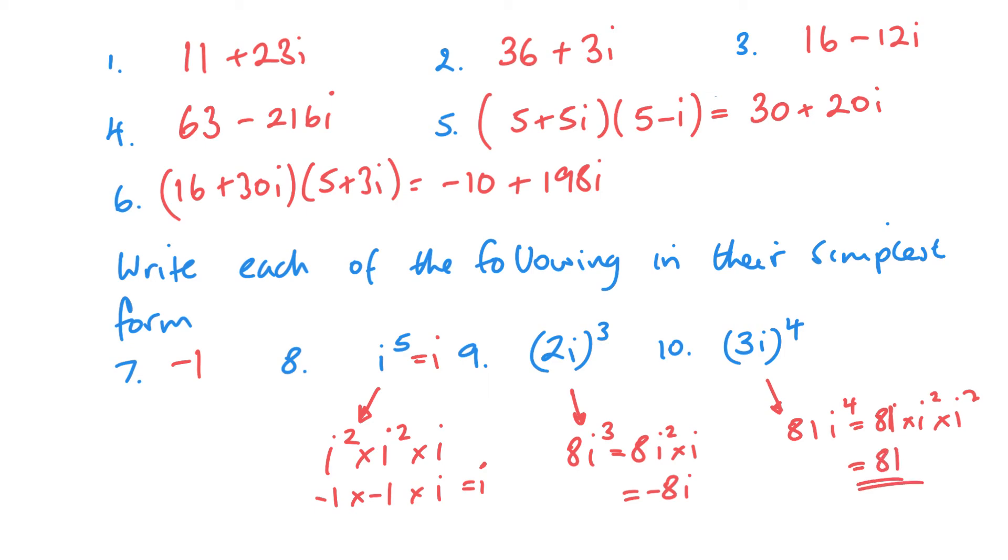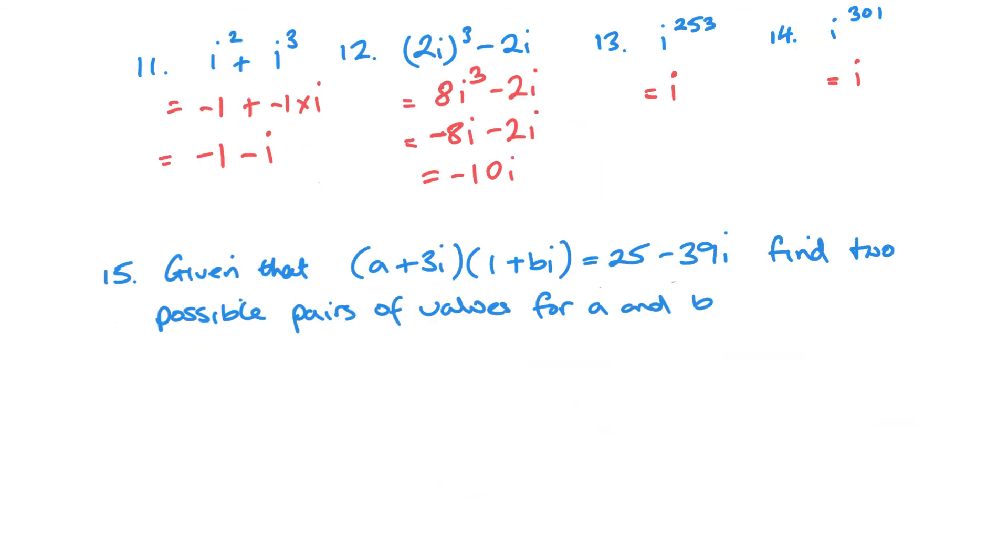So really what you're doing with the powers is you're just breaking them up into i squareds. And then for the even number of i squareds you've got, it's going to be a positive one. Or the odd number of i squareds will obviously be a negative one. Here's the answers to 11, 12, 13 and 14.